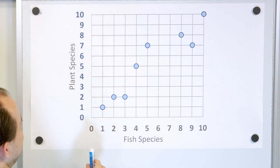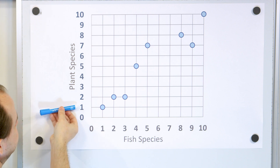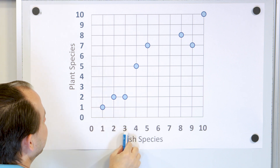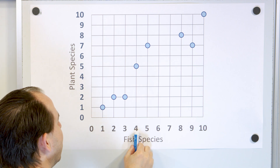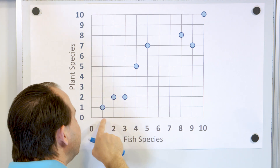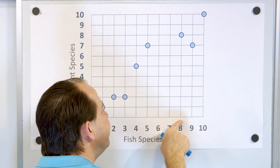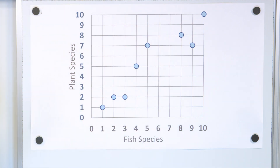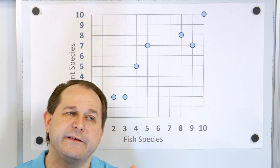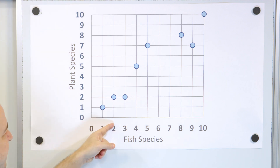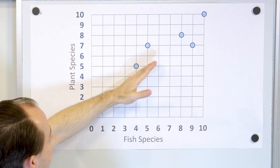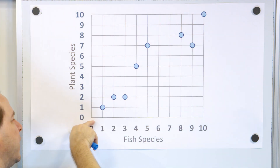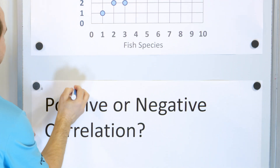In a pond with one species of fish, we only had one species of plant. In a separate pond with two species of fish, we had two plant species. This pond had three species of fish and two plant species. This pond had four species of fish and five plant species. So you can see that ponds with higher numbers of fish species also had a higher number of plant species. Is this data correlated? As the number of fish species increases, the number of plant species also increases. You could draw a line through this data, and you can see that as one goes up, the other goes up — that's called a positive correlation.